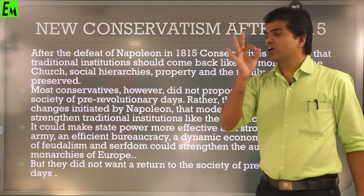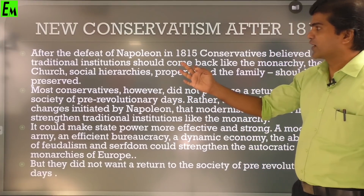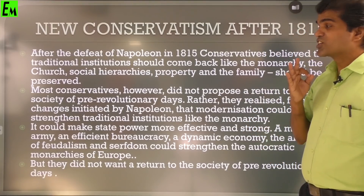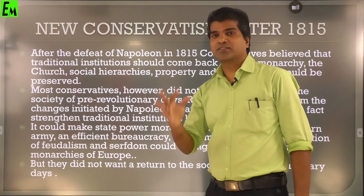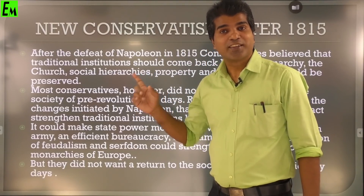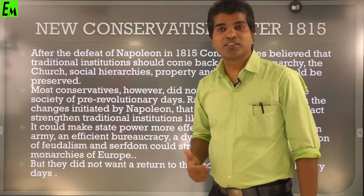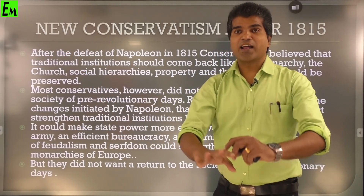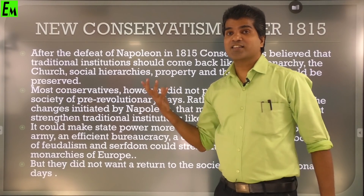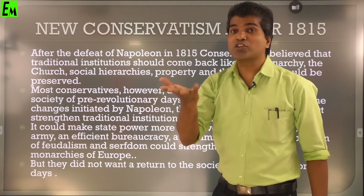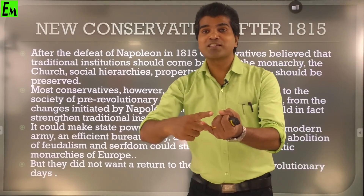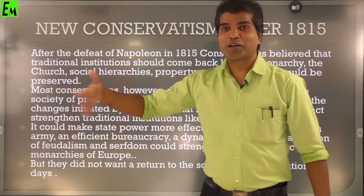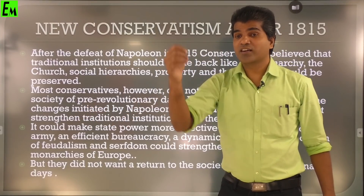The first point about conservatives: after the defeat of Napoleon in 1815, conservatives believed that traditional institutions should come back. They are not ready to change as society changes - they wanted to bring back the traditional institution. Napoleon Bonaparte is no more, the country is empty, now we want a new government. They said they wanted traditional institutions - which means monarchy, the church, the privileges, the noble and clergy. So many things should come back.